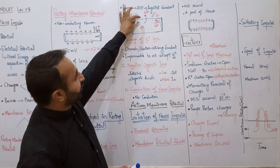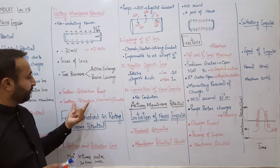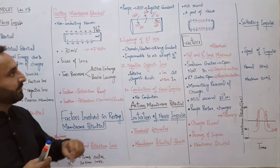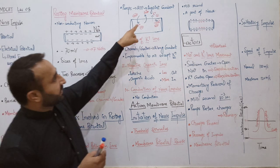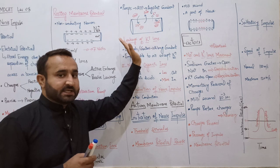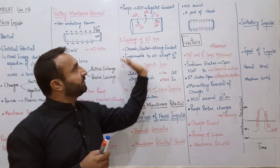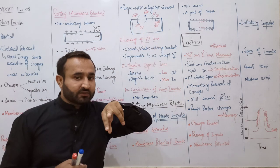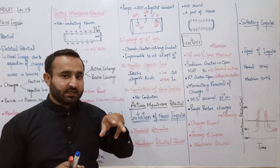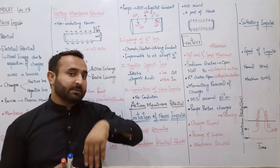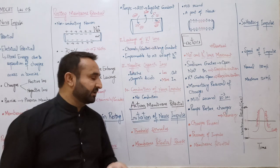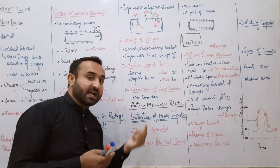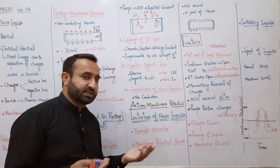Resting membrane potential میں sodium-potassium pump جب کام کر رہا ہے تو 2 potassium اندر لائے جا رہے ہیں اور 3 sodium باہر نکالے جا رہے ہیں۔ دو کے مقابلے میں تین sodium - اس وجہ سے بھی باہر positive charge زیادہ اور اندر negative charge زیادہ ہوتا ہے۔